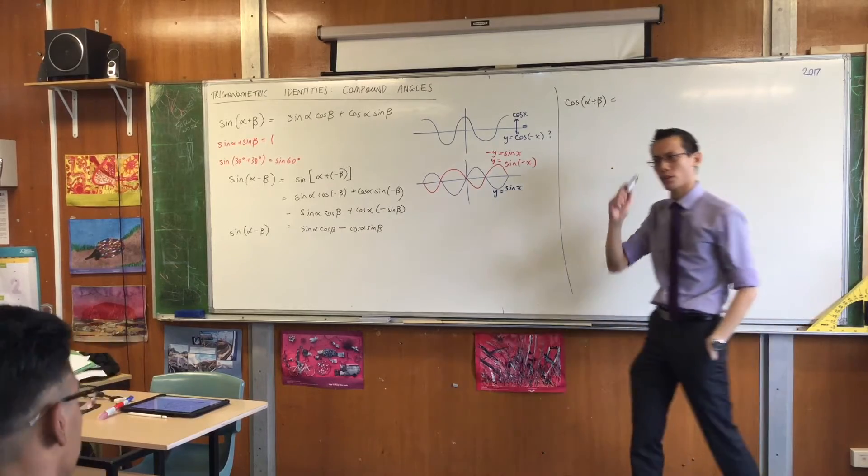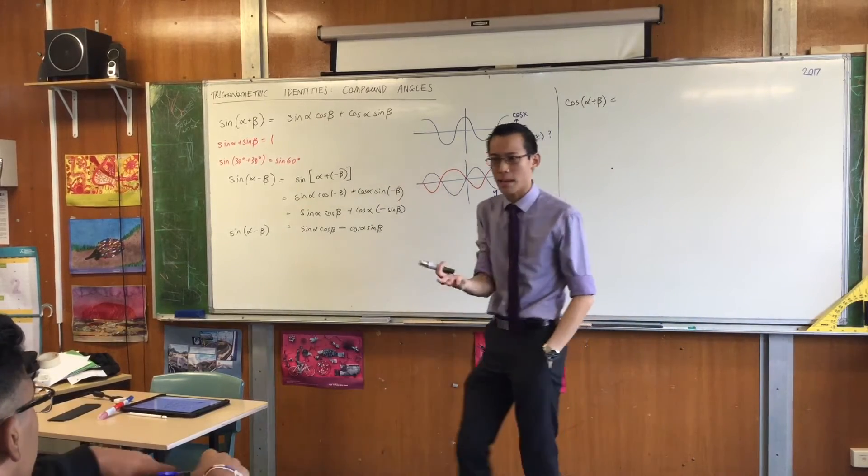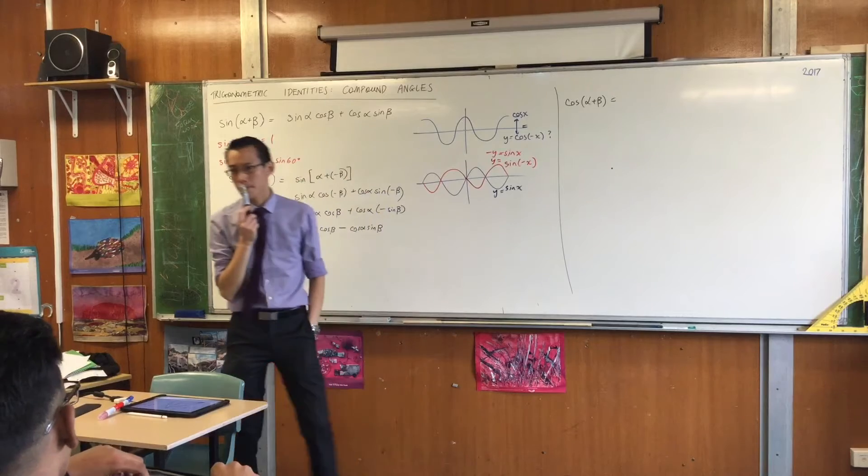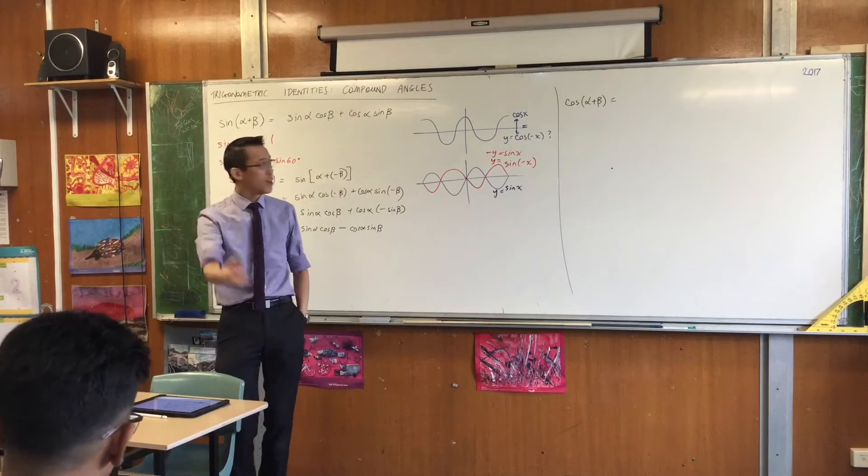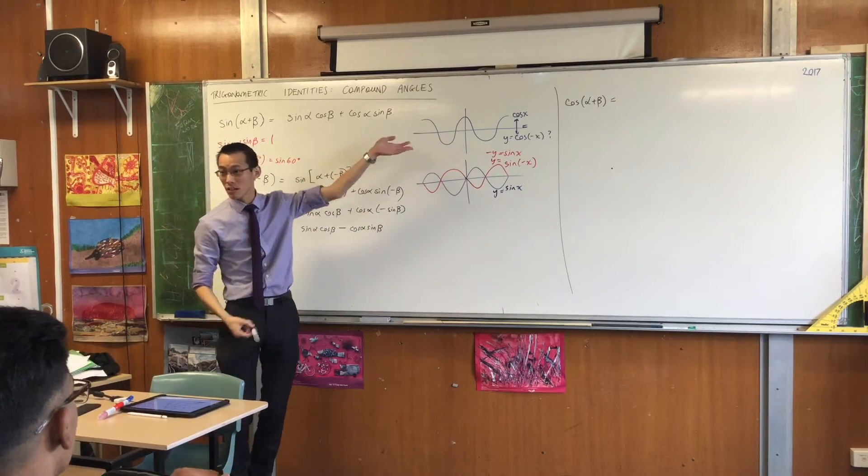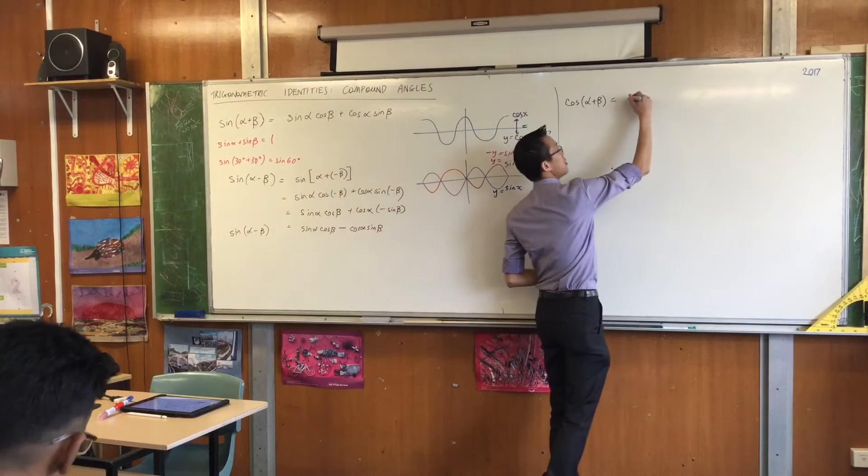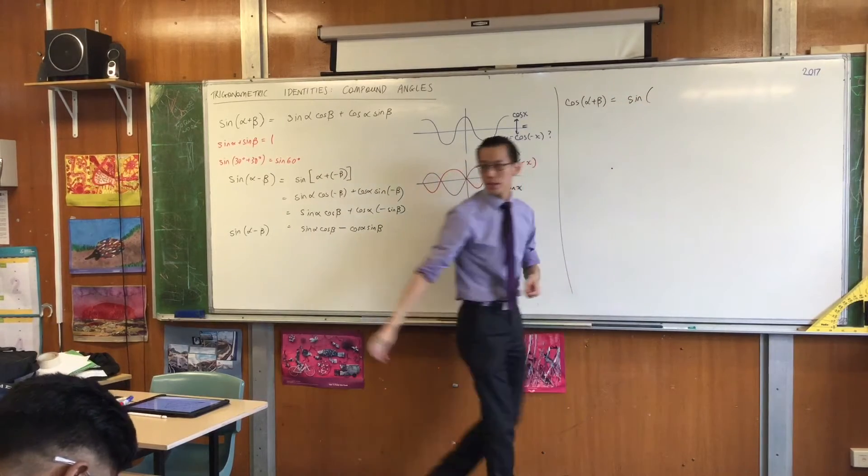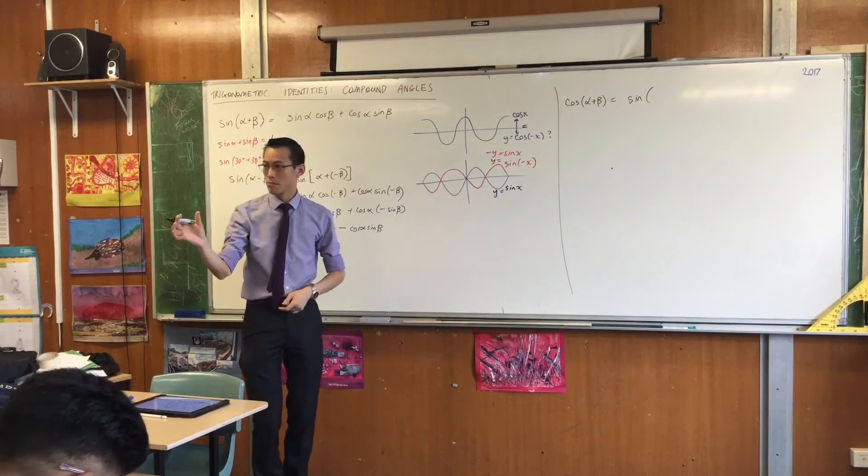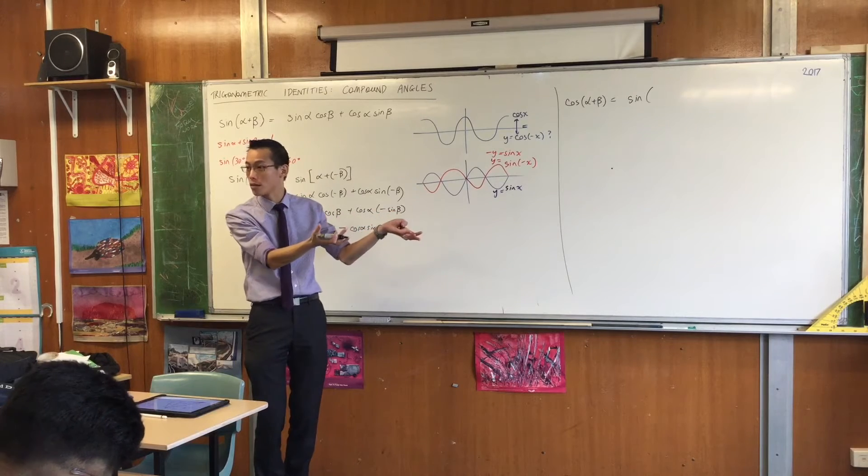So what's the relationship between sine and cosine again? Like, what does the name tell you? Complement. It's the complement, right? So therefore, cos of something should be equal to sine of 90 degrees minus whatever that something was. Does that make sense?